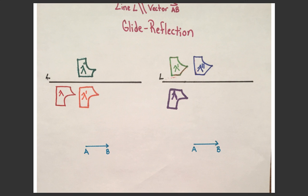On the left side, we're going to translate then reflect. We have this original image lambda, and we translate along vector AB to lambda prime. Then we reflect across L to give us our final image lambda double prime.